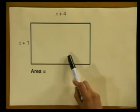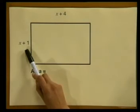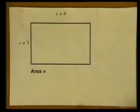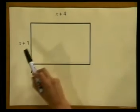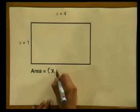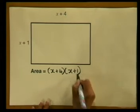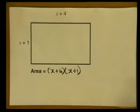Here is the rectangle with sides x plus 4 and x plus 1. We are asked: what is the area of the rectangle? We all know that the area of a rectangle is length times breadth. So it is x plus 4 multiplied by x plus 1. But how do we simplify this expression? Let's do it visually on the diagram.